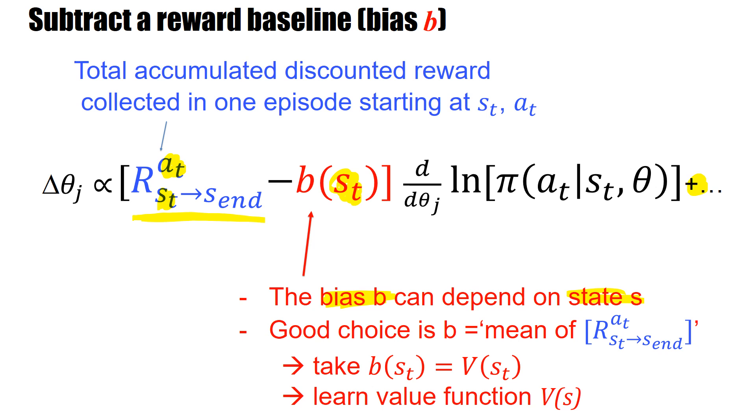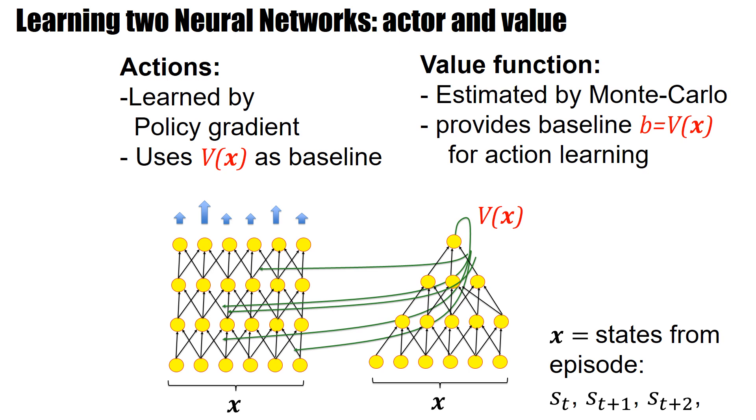A good choice is to choose the bias to be the mean or expectation of the return. What is this mean or expectation of the return? That is just the definition of the value, the value of a state. What we essentially subtract is V(st). But this V(st), this value at time t, must be estimated.